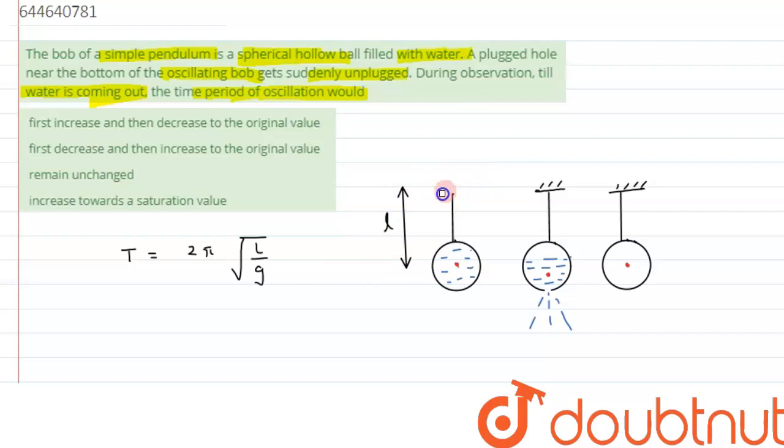Now we have been given that there is a plug in the bottom and it suddenly gets unplugged while oscillation, so water starts coming out. So the center of mass of the sphere shifts downward.